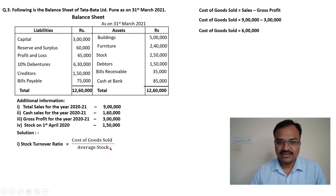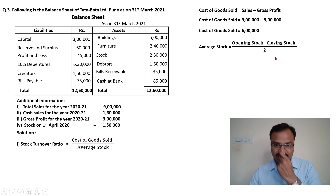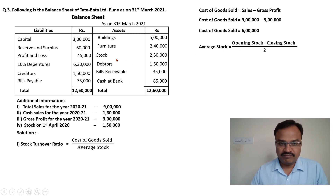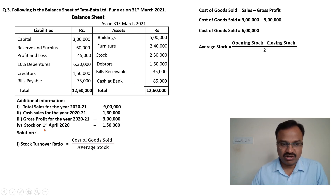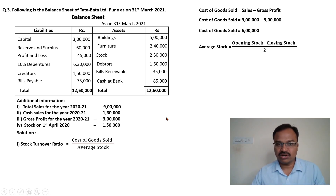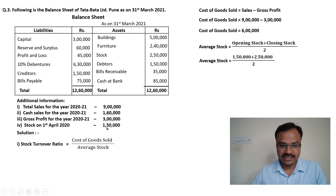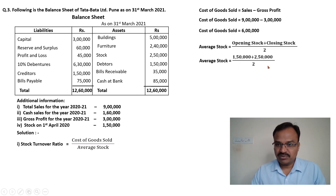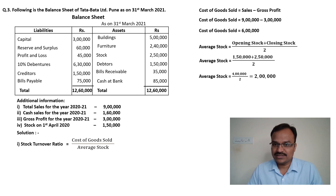Along with cost of goods sold, we need to calculate the average stock as well. For average stock, the formula is opening stock plus closing stock divided by 2. In the balance sheet as on 31st March 2021, stock is given as 2 lakh 50,000 - this is the closing stock. In the additional information, stock on 1st April 2020 is given as the opening stock, which is 1 lakh 50,000. So opening stock 1 lakh 50,000 plus closing stock 2 lakh 50,000 gives us 4 lakh, divided by 2, average stock is 2 lakh rupees.